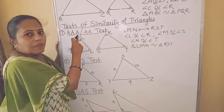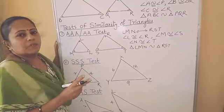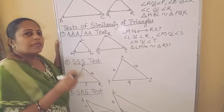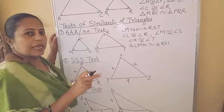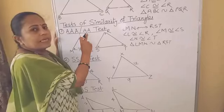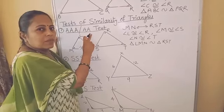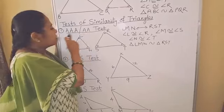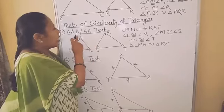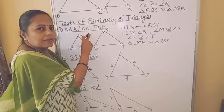If you get only two pairs of corresponding angles congruent, then also the triangles are similar, and then the test is called the AA test.